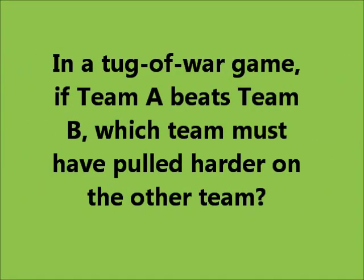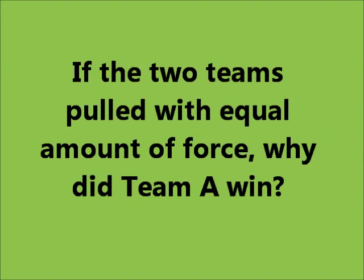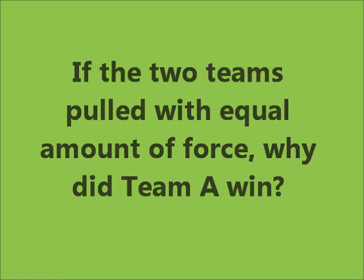So in a tug of war game, if team A beats team B, which team must have pulled harder on the other team? According to the third law, the two teams pulled with equal amounts of force. But why did team A win? Because team B had less friction. To get more friction in tug of war, we need to recruit heavier people and have them wear better gripping shoes.